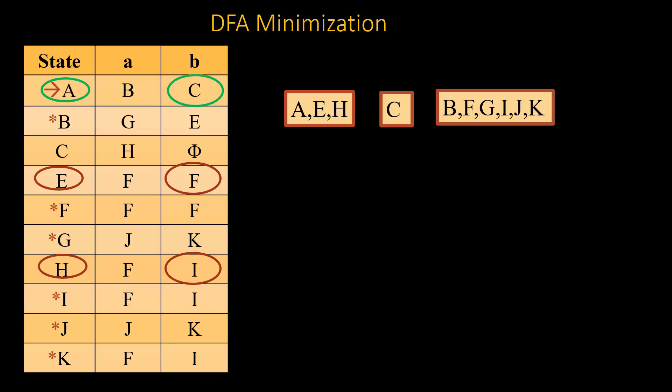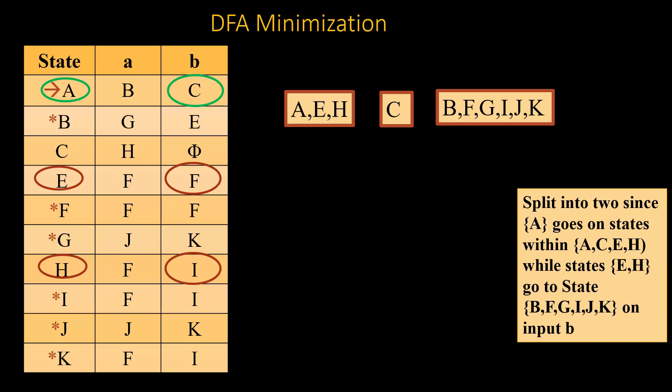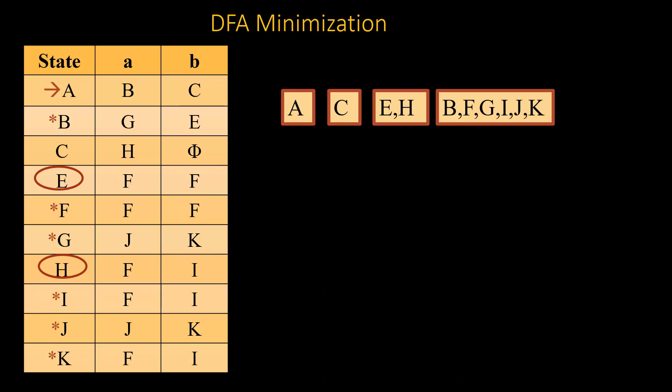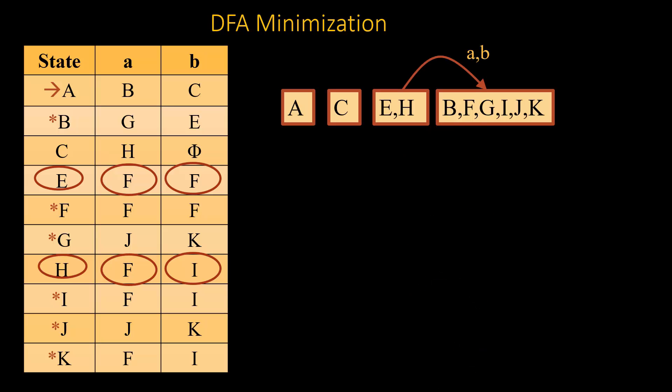We then check {A, E, H} on input B. A goes to C (non-final set), whereas E and H go to the set of final states. So we split A out, leaving four non-final groups: {A}, {C}, {E, H}. We then check {E, H} on A — both go to F (final states) — and on B, both go to F or I (also final states). So E and H can be merged together; no splitting is required.